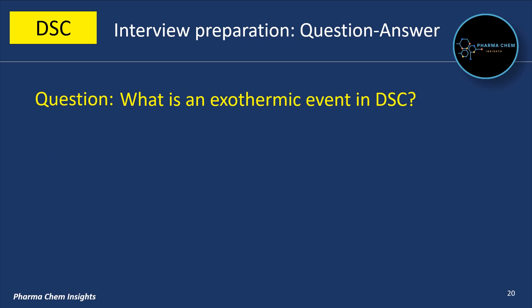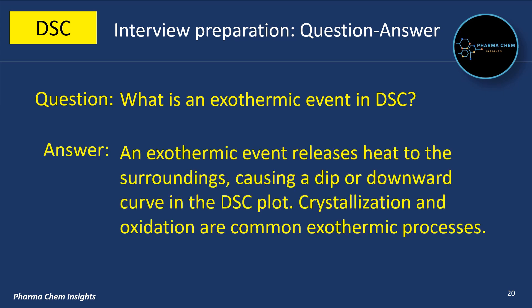Next question: What is an exothermic event in DSC? An exothermic event releases heat to the surroundings, causing a dip or downward curve in the DSC plot. Crystallization and oxidation are common exothermic processes.